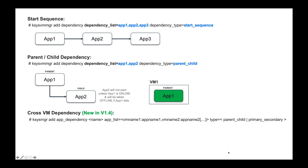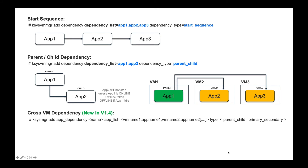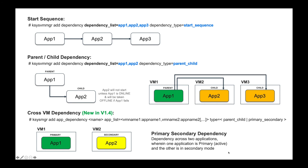New in the 1.4 release: cross-VM parent-child dependencies. You can now set up a dependency where an application in VM 1 must come online before an application in VM 2, even orchestrating across multiple VMs. There's also a primary-secondary dependency — for example, with the new HANA agent that monitors HANA system replication, you can have the primary HANA instance in VM 1 and secondary in VM 2, and if a failure is detected, it can automatically reverse roles, making the secondary the primary.